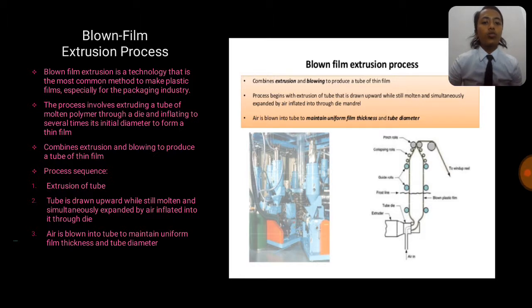Firstly is the extrusion of the tube. Next, the tube is drawn upward while still molten and simultaneously expanded by air inflated into it through die. And lastly, air is blown into tube to maintain uniform film thickness and tube diameter.